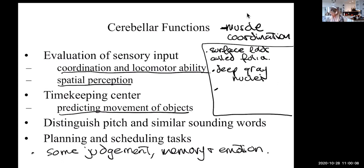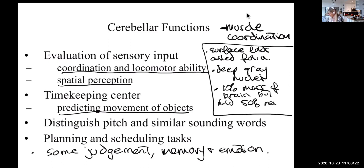It's a small part of the brain — only 10% of the brain's mass — but it holds 50% of all the neurons of the brain, so it's an extremely important structure. That's roughly 100 billion neurons or so.